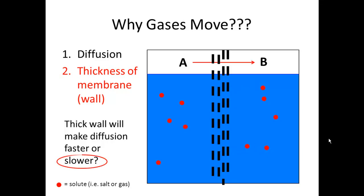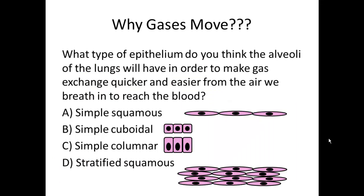That's not going to be good if you think about the lungs. You don't want to have a hard barrier because when you're trying to breathe, you want these gases to flow through much easier. So here's the question: What type of epithelium do you think the alveoli of the lungs will have in order to make gas exchange quicker and easier from the air we breathe in to reach the blood in order to be transported to the rest of our tissues?